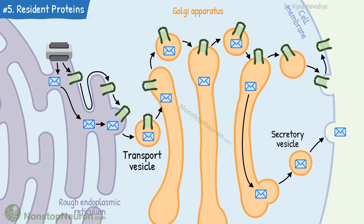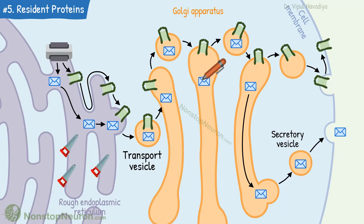Next point: resident proteins of any organelle do not get swept along the flow. For example, a protein belonging to the Golgi apparatus that is involved in processing of proteins — when vesicles are being formed, this protein is not incorporated into the vesicles; it always stays there. Likewise, resident proteins of the endoplasmic reticulum also stay there only.